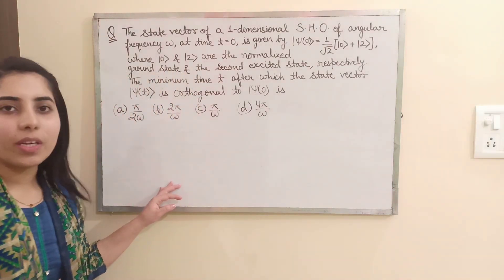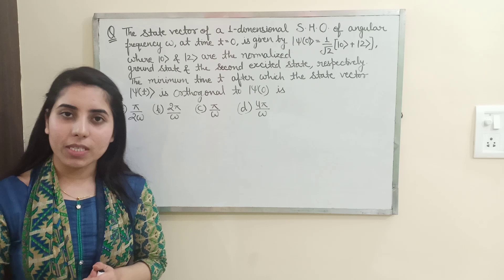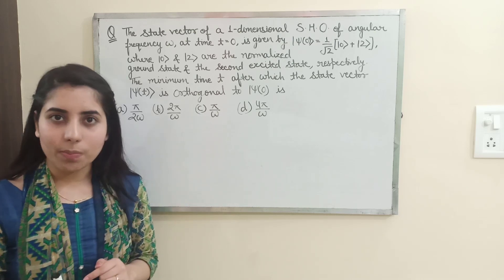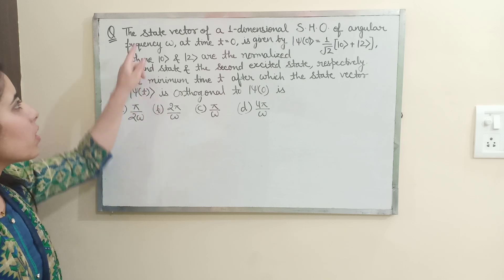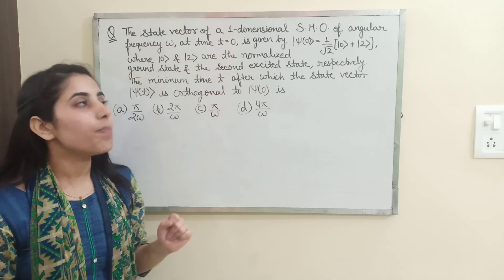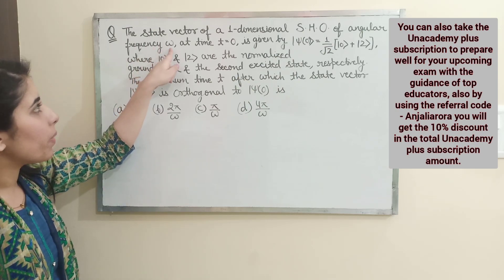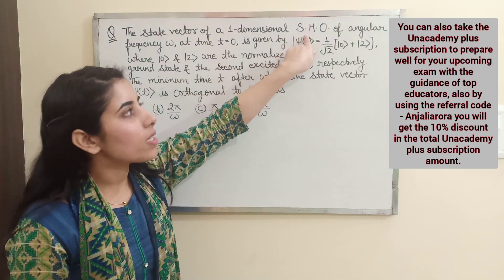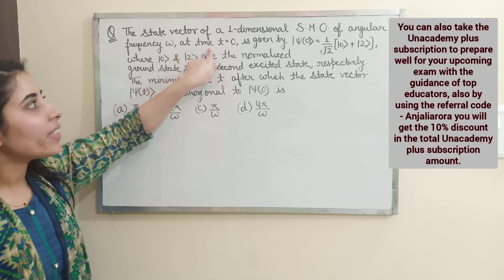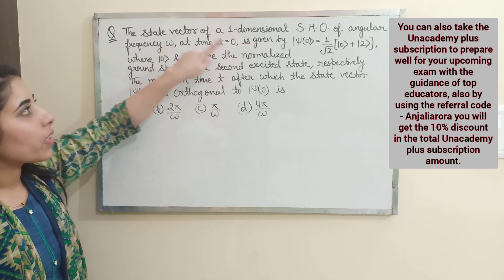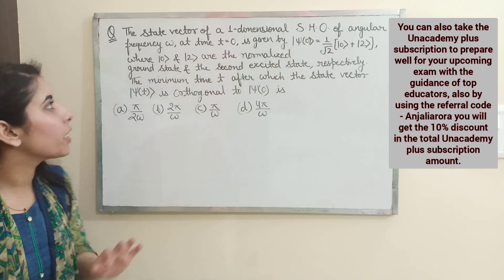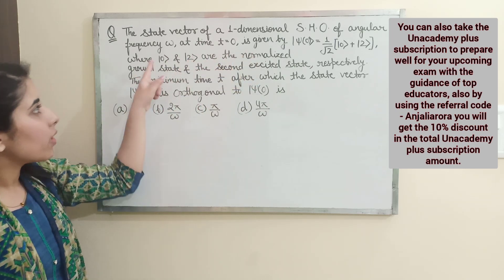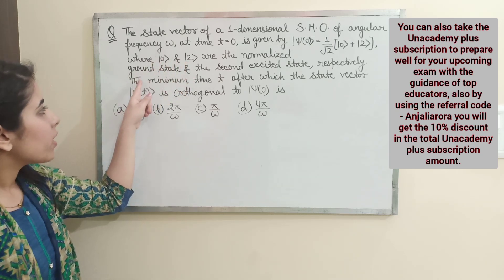The question we are looking at is from the previous years' CSIR NET physics exam. Let's have a look at the steps. The question is: the state vector of a one-dimensional simple harmonic oscillator of angular frequency omega — so the system is a one-dimensional simple harmonic oscillator. At time t = 0, its state vector is given by this expression, where |0⟩ and |2⟩ are the normalized ground state and the second excited state.